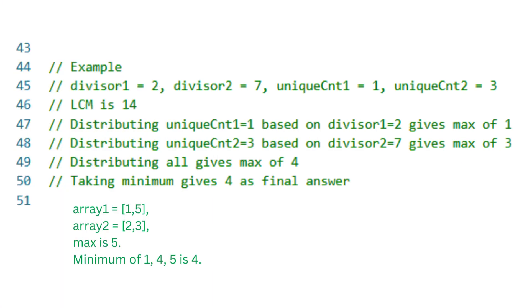Let's walk through the full example. Divisor 1 equals 2, divisor 2 equals 7. Unique CNT1 equals 1, unique CNT2 equals 3. LCM is 14. Distributing unique count 1 equals 1 based on divisor 1 gives array 1 equals {1}, max is 1.